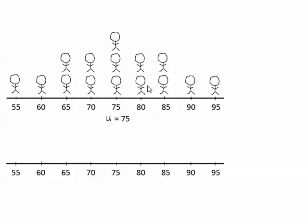What I want to demonstrate is collecting data from a sample of the population and calculating the mean of the sample to estimate the population mean. I want to show you that typically, when I take random samples from this population, the sample mean will fall somewhere close to the population mean of 75 — pretty close on either side. Because the mean of a random sample usually does a pretty good job of estimating the population mean, especially when the sample size is large.